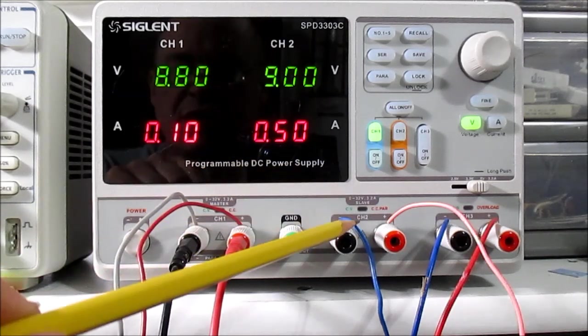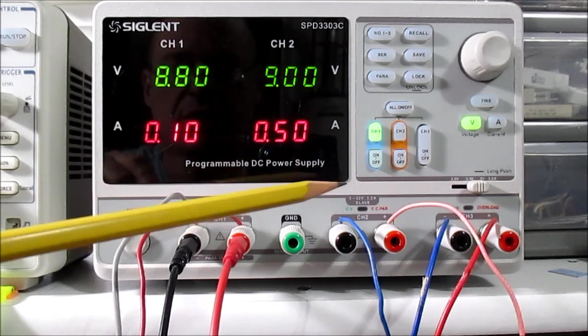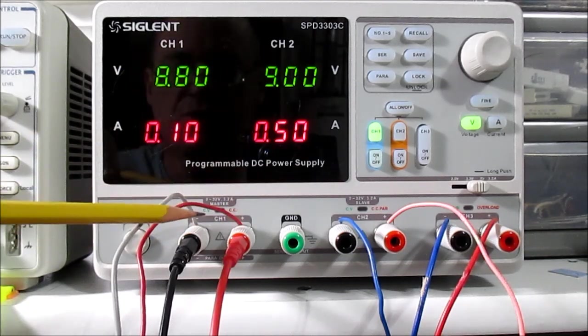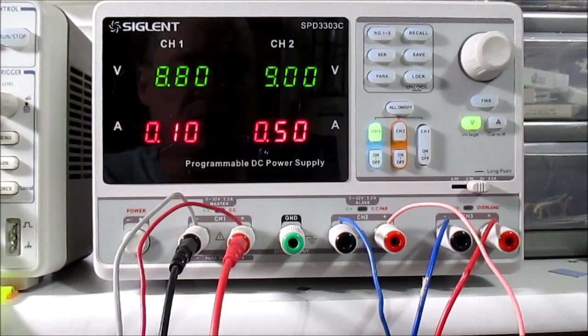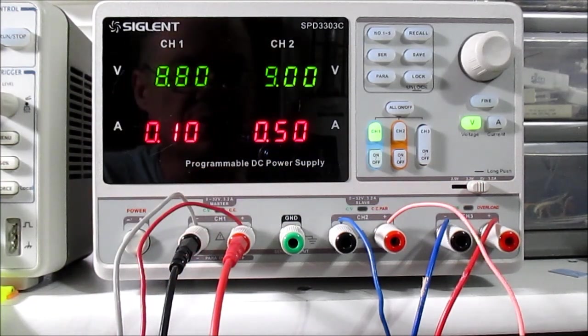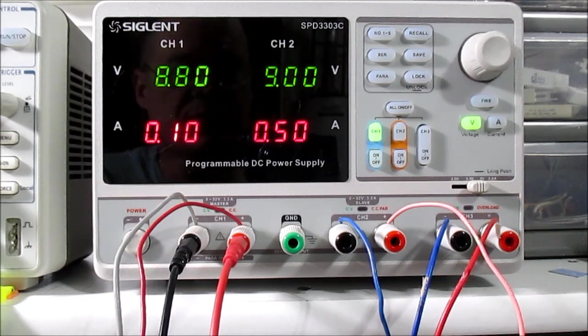You have your two main channels. They go from 0 to 32 volts and up to 3.2 amps. The third channel has three fixed voltages of 2.5, 3.3, and 5 volts, and a maximum of 3.2 amps.